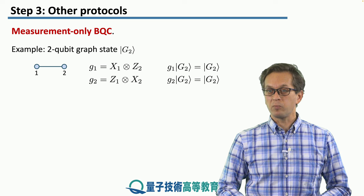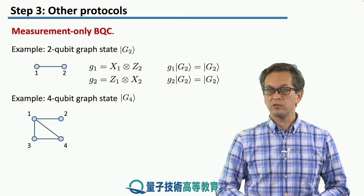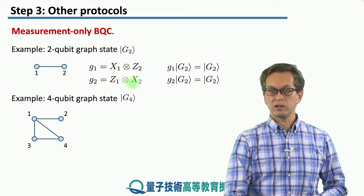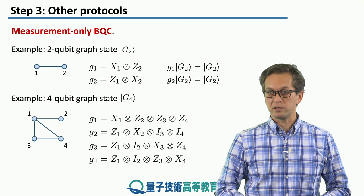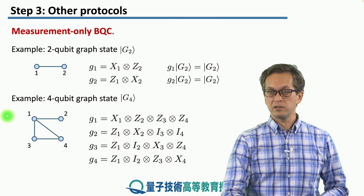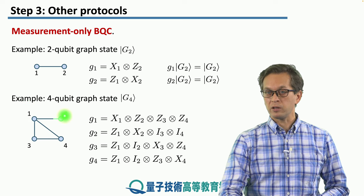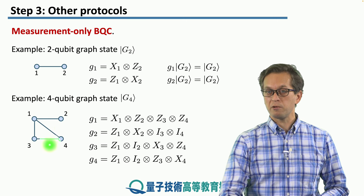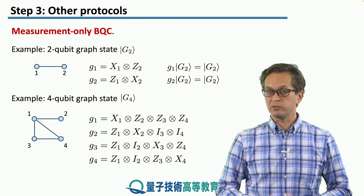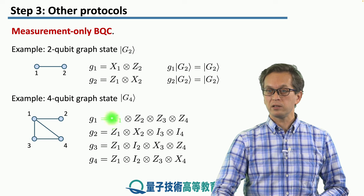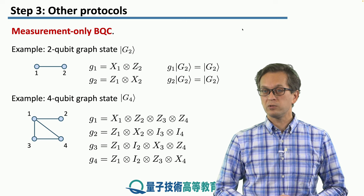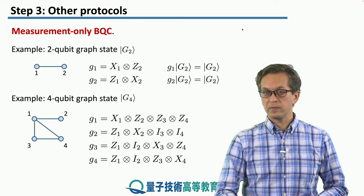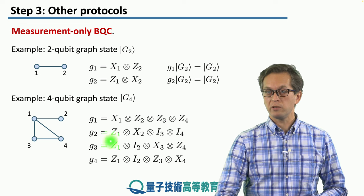Let's look at a more complicated example: a four-qubit graph state G4. We have a graph representing this graph state, with four stabilizer operators. For g1, we apply X to the first qubit and Z to all of its neighbors — qubits 2, 3, and 4 — so g1 = X1 tensor Z2 tensor Z3 tensor Z4. Similarly, we compute g2, g3, and g4 for the other qubits.